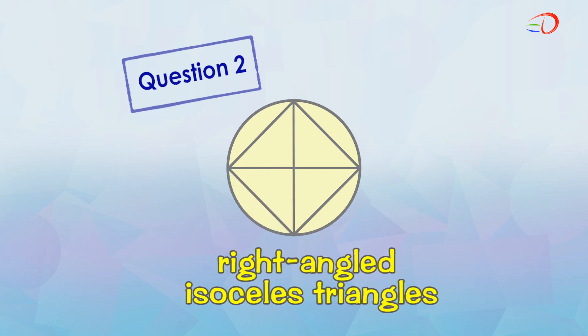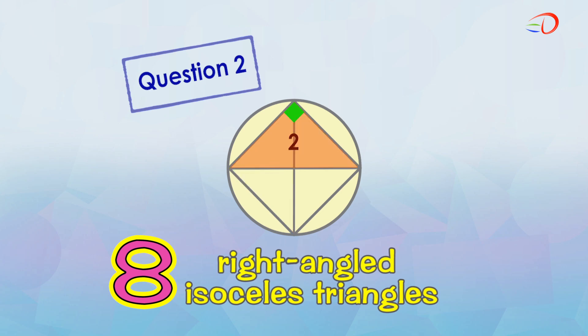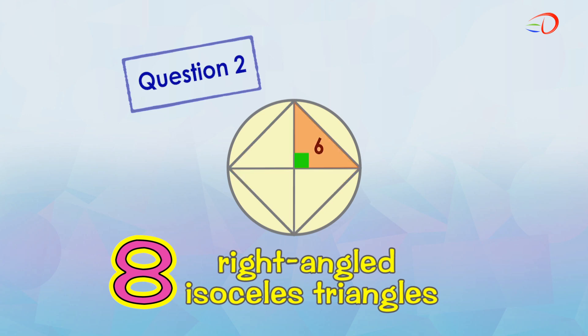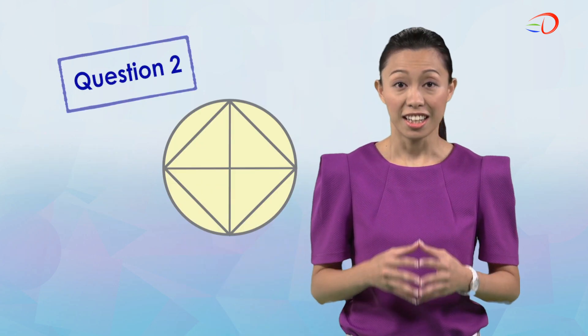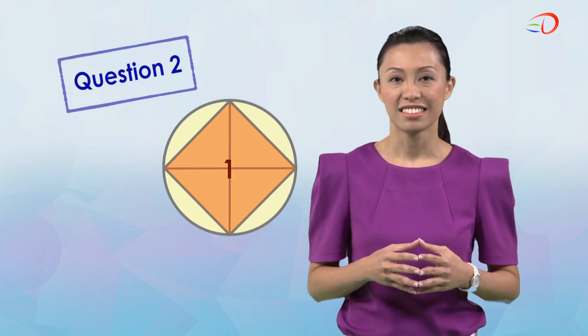How about right-angled isosceles triangles? There are eight of them: one, two, three, four, five, six, seven, and eight. Are you able to identify one more familiar basic shape? Here it is — a square. What if we add another square to this? Let's look at challenge three.